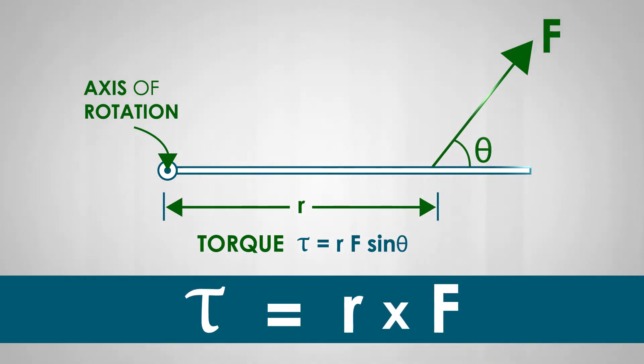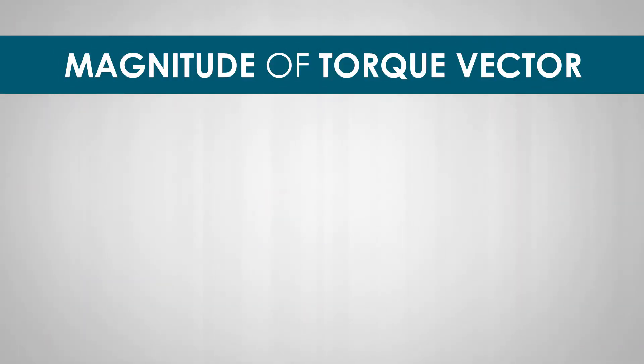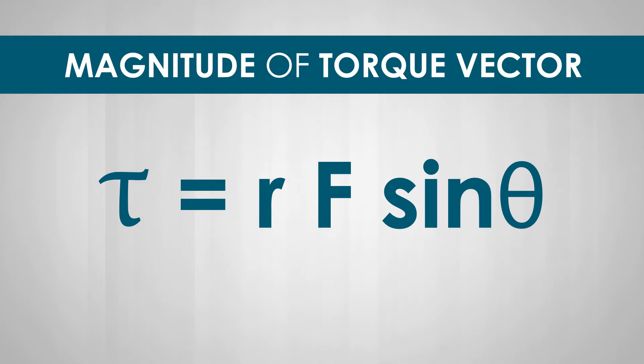The magnitude of the torque vector is given by R F sine theta, where R is the distance from the axis of rotation to the point of application of the force.